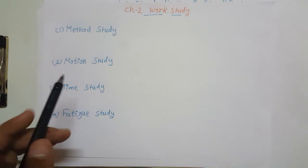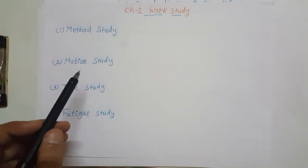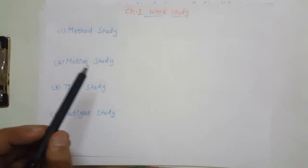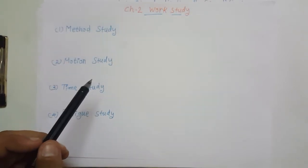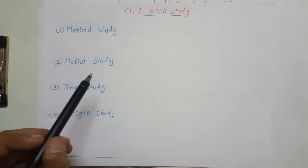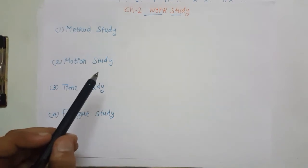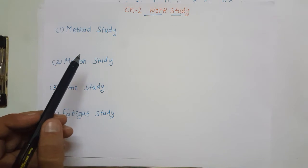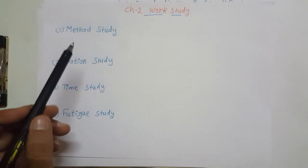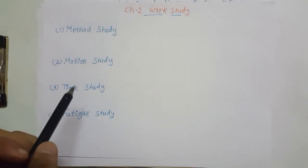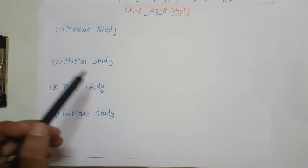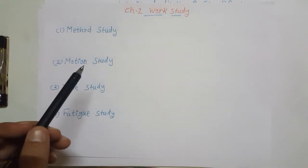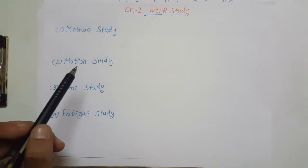Let's go to the next topic: work study. This study was conducted by F.W. Taylor to eliminate unnecessary movements, unnecessary actions, or unnecessary things in the production. When he was working as an engineer, he conducted four kinds of studies to set a standard and improve the efficiency of workers.